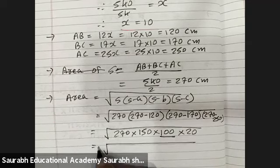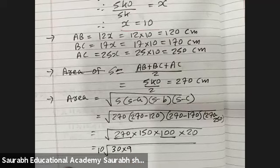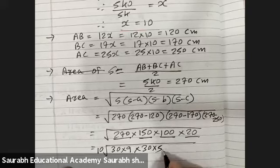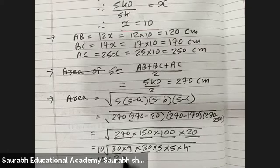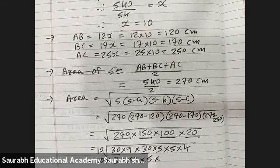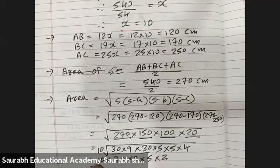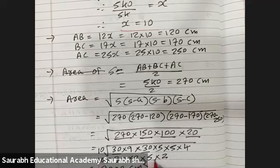Root of 100 is 10, taken outside. Now factorize: 270 = 30 × 9, 150 = 30 × 5, 20 = 5 × 4. So we have 10 × root of 30 × 9 × 30 × 5 × 5 × 4. Root of 9 is 3, root of 25 is 5, root of 4 is 2, and 30 appears twice so comes out once. Result: 10 × 30 × 3 × 5 × 2 = 10 × 900 = 9,000 centimetre square.